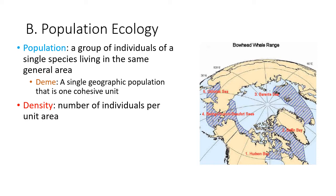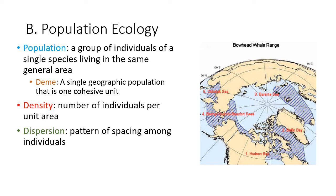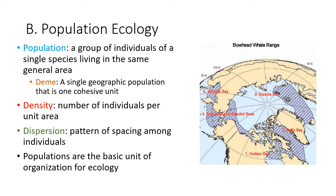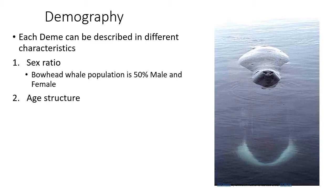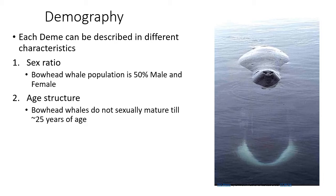Some things we're interested in within population ecology include how many individuals are in a certain area — that's density — where they go, and how far spaced they are in relation to each other. Populations are generally the basic unit of organization in ecology. Demographic characteristics include sex ratio: how many males, how many females, and how many of those reproduce. For the bowhead whale, it's approximately 50-50, though that's not always the case in other organisms.